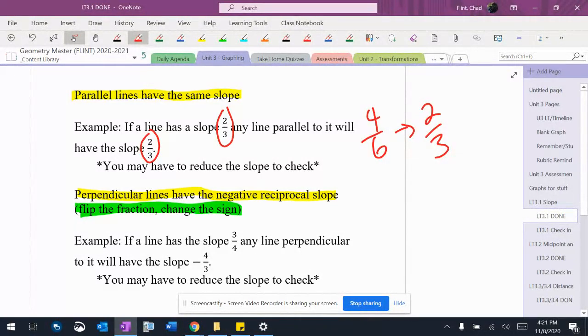It could be something like that, but they have to be exactly the same. So if it was two-thirds and negative two-thirds, those are not parallel because they're not the same.